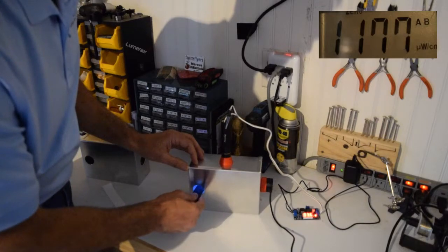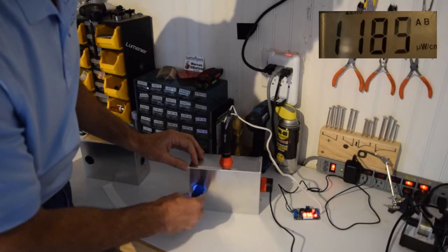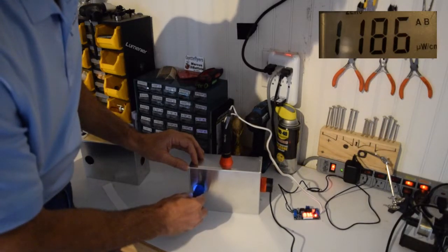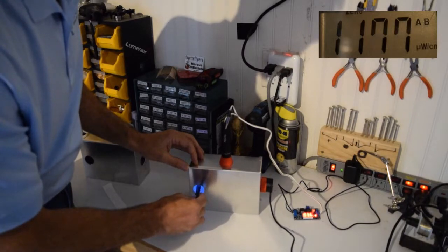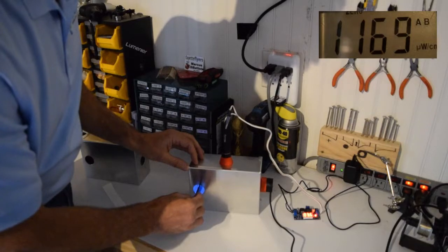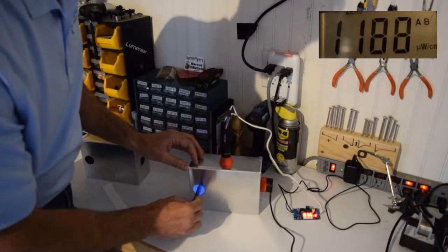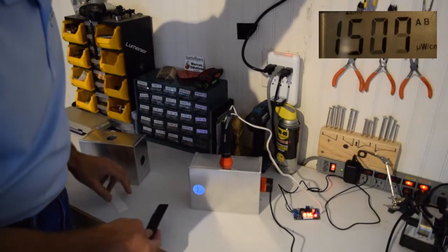If you turn it you can see it really doesn't change much, so it doesn't matter if it's at a 90 degree angle or straight up and down. The object is absorbing about the same amount of energy, so the shadow effect is minimized.